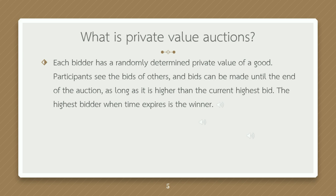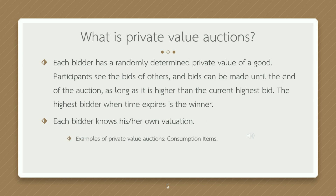In private value auctions, each bidder has a randomly determined private value of a good. Participants see the bids of others, and bids can be made until the end of the auction as long as they are higher than the current highest bid. The highest bidder when time expires is the winner, and each bidder knows his or her own valuation. Examples include consumption items.